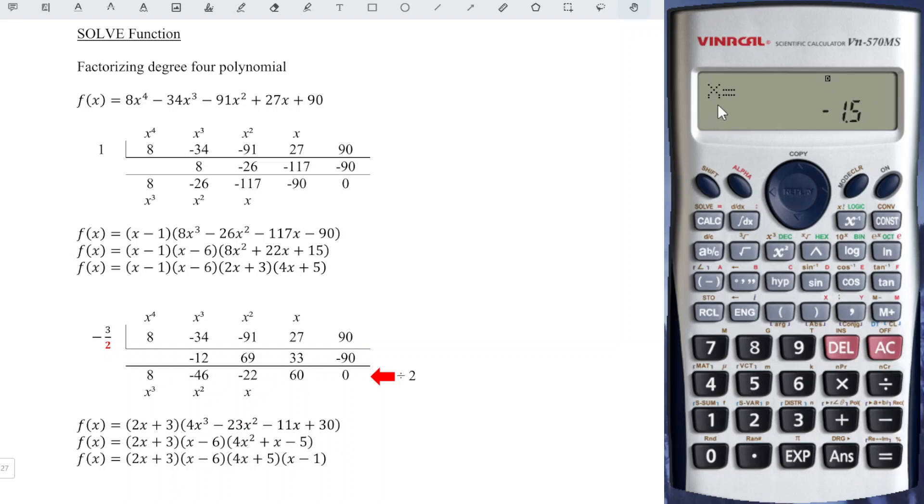Okay. So for this case, we have x is equal to negative 1.5. We change to improper fraction, so we have negative 3 over 2. Rearrange. So we obtain x plus 3 over 2 is equal to zero. Then we times the entire equation by 2. So we obtain 2x plus 3 is equal to zero, which is the first factor that we have here.